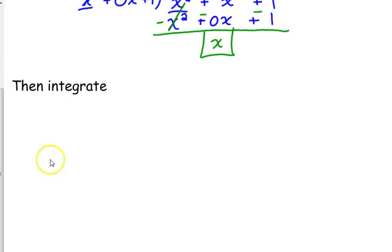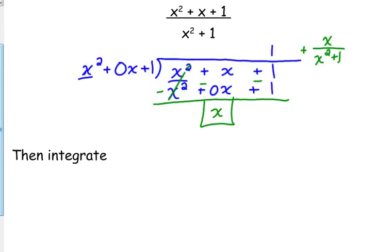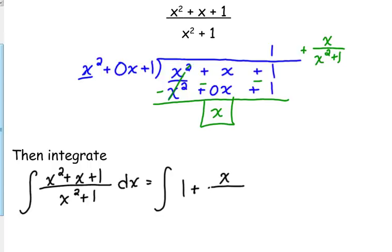X plus negative 0x is just x. And 1 plus negative 1 is 0. So x is our remainder. Do you remember how we wrote the remainder? We put the remainder over what we divided by. We're going to do several of these. So if we were asked to integrate this, this is what the problem looks like: the integral of x squared plus x plus 1 over x squared plus 1 dx. We can't do what we were just doing because the derivative of the denominator is not the numerator. So here's our result. We're going to rewrite this. 1 plus x over x squared plus 1 is the exact same expression as that original rational expression.